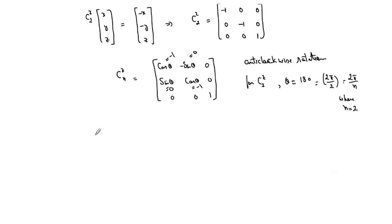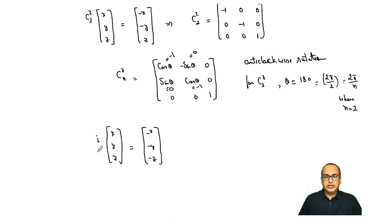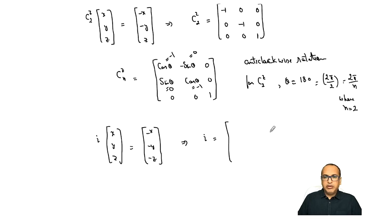For the inversion operation i: by definition, i flips all coordinates, giving (−x, −y, −z). The vector moves to the opposite quadrant in 3D space. The transformation matrix is the unit matrix with all diagonal entries as −1: [−1 0 0 / 0 −1 0 / 0 0 −1].